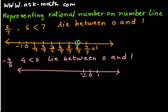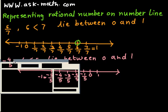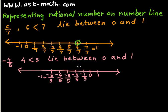So negative 1 over 5, negative 2 over 5, negative 3 over 5, negative 4 over 5, negative 5 over 5 which is equal to negative 1. So given number negative 4 over 5 is here.